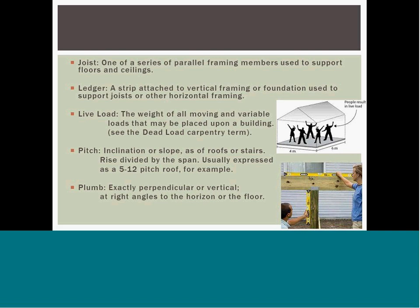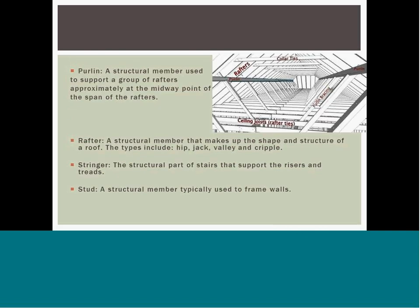Pitch is the degree of inclination or slope, as in the rise of stairs, or a rise divided by the span — usually expressed as a ratio, for example a 5/12 pitch roof. A purlin is a peripheral member used to support a group of rafters, typically at the midway point of the span. A rafter is a structural member that makes up the shape and structure of a roof; types include hip, jack, valley, and cripple. Both the rafter and the purlin can be seen in the diagram on the ceiling.